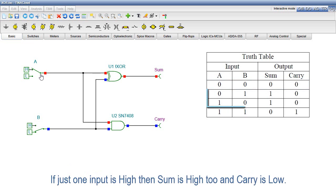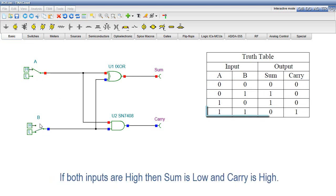If just one input is high, then SUM is high too and CARRY is low. If both inputs are high, then SUM is low and CARRY is high.